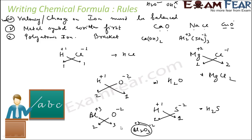In all these cases you can see that the metal is written first on the left-hand side. Hydrogen can be both metal and non-metal, but the metallic character of calcium and oxygen is more pronounced, so hydrogen is written with a positive charge.